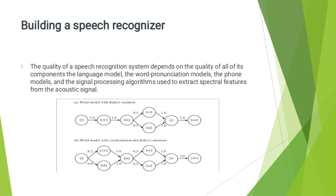The quality of a speech recognition system depends on the quality of all of its components: the language model, the word pronunciation models, the phone model, and the signal processing algorithm used to extract spectral features from the acoustic signal. This example shows building a speech recognition system, with the two pronunciation models of the word 'tomato'.